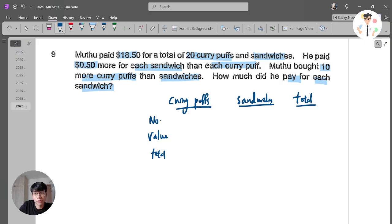Since we are talking about money, talking about the number, I can put this in a number and value concept way. I have 20 curry puffs. And he paid $0.50 more for each sandwich. So here I know this is $0.50 more than this. And Muthu bought 10 more curry puffs than sandwiches. Means that I have 10 here. Means I have 10 more than this.